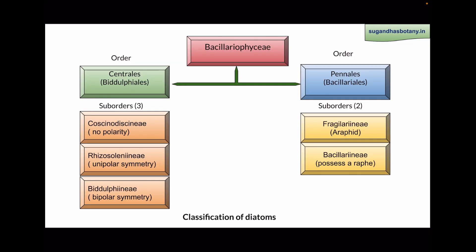Bacillariophyceae is divided into two main orders. Centrales are also known as Biddulphiales, and order pennales is known as Bacillariales. Order centrales is divided into three suborders: Coscinodiscineae, in which the cells do not have polarity; Rhizosolenineae, in which the cells have unipolar symmetry; and Biddulphiineae, in which the cells have bipolar symmetry. There are two suborders of order pennales: Fragilarianae, which have araphid diatoms in which raphe is absent; and Bacillarianae, in which the diatom cell has a raphe.